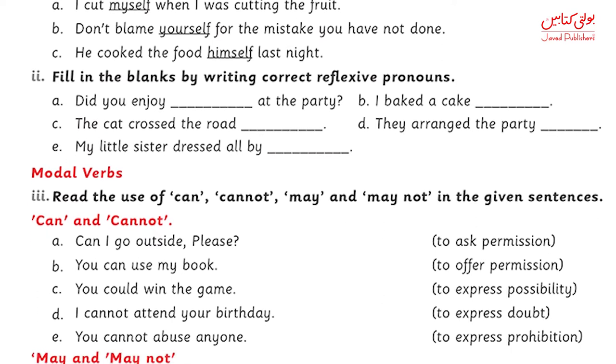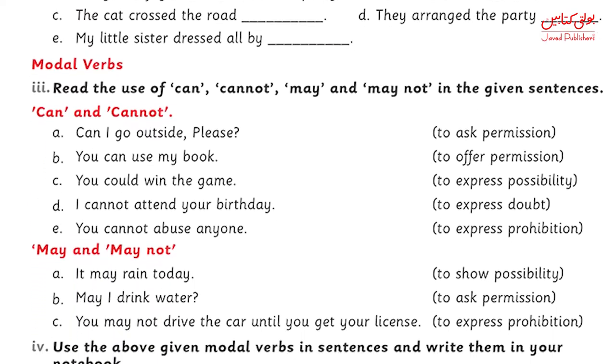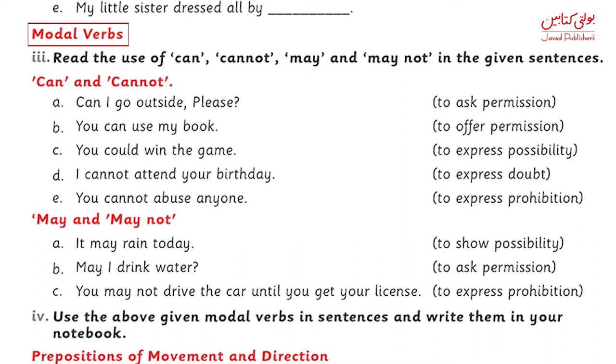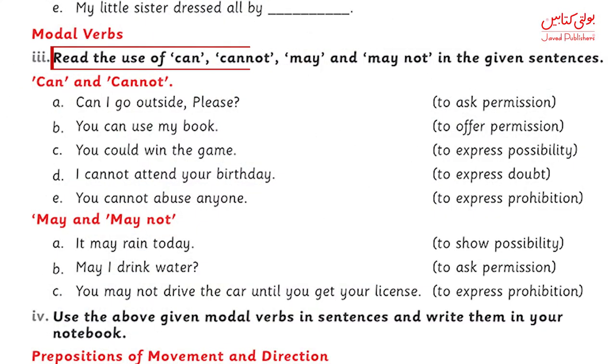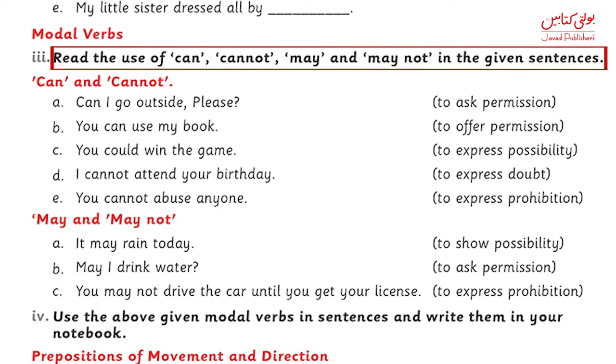Now we will be doing modal verbs. We have studied verbs: main verbs, helping verbs, and modal verbs. Modal verbs ki speciality yeh hoti hai ke jab aap yeh verbs use kerti hai — jis meh examples hai can, cannot, may, may not — toh aap permission ya possibility ki baat kar rahi hoti hai. Jaisa ke agar aap keheti hai I have to do this, us meh possibility ki baat nahi, us meh guarantee ki baat hai.